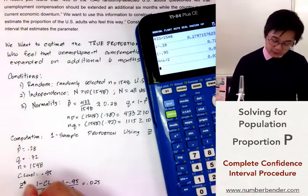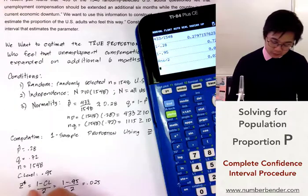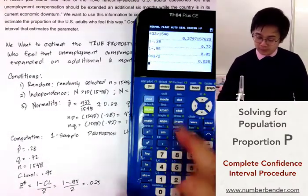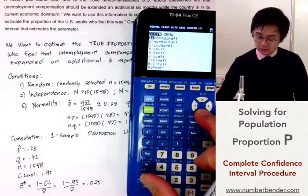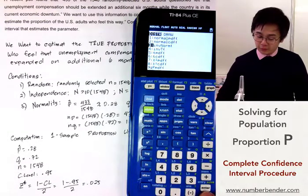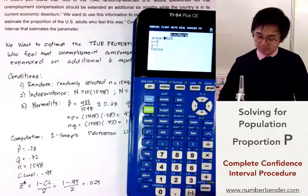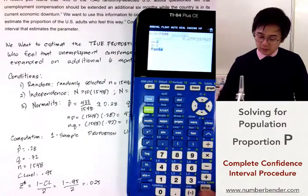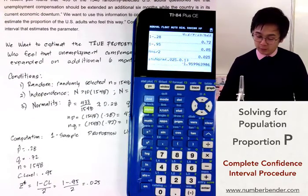To find our critical value at 0.025, we're going to use inverse normal, second function vars. Go to inverse normal, which is number 3 under distribution. 0.025, which is equal to 1.96.